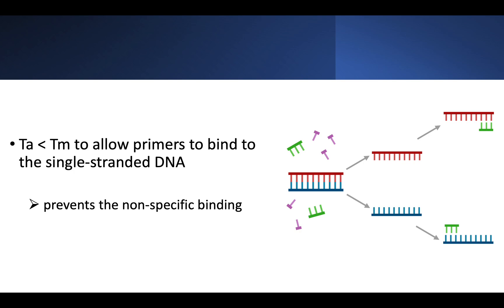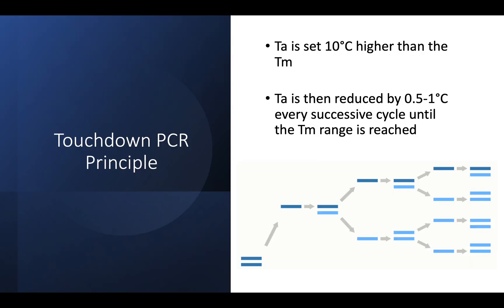So what is touchdown PCR? Like I mentioned, touchdown PCR is only a modification of the annealing step of the normal PCR reaction. In touchdown PCR, the annealing temperature is initially set 10 degrees higher than the melting temperature of the primers. Why do we have to have such high annealing temperature? It's because using such stringent condition favors the perfect binding of primers to the template DNA.